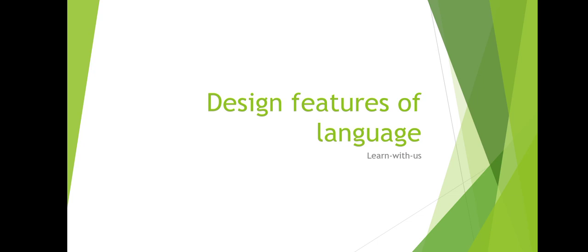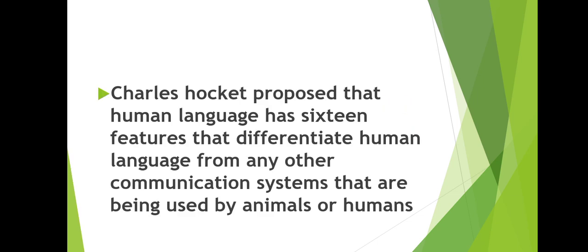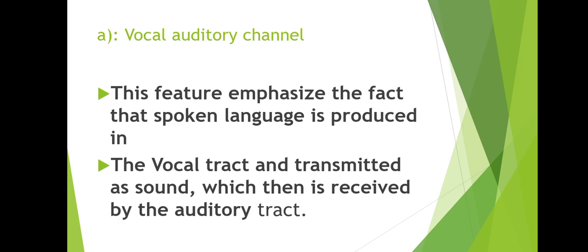Let's start. Basically, these design features were given by Charles Hockett. Hockett proposed that human language has 16 features that differentiate human language from any other communication systems used by animals or other humans. The first one is vocal-auditory channel. This feature emphasizes the fact that spoken language is produced in the vocal tract.